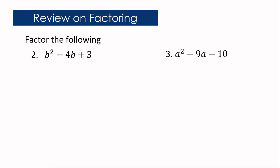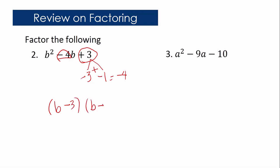Now let us factor b squared minus 4b plus 3. This expression is a quadratic trinomial and its factors are two binomials. You are going to find factors of positive 3 that when added will give you a sum of negative 4. Negative 3 and negative 1 multiply to give positive 3, and when you add them, the answer is negative 4. So the factors of b squared minus 4b plus 3 are b minus 3 and b minus 1.